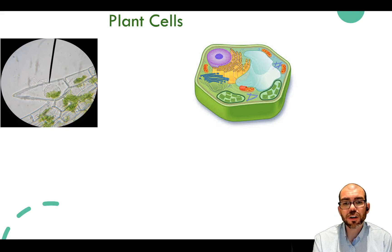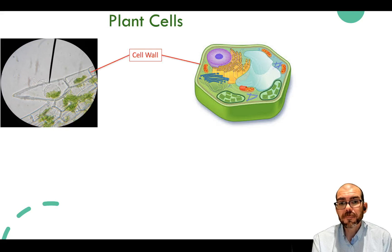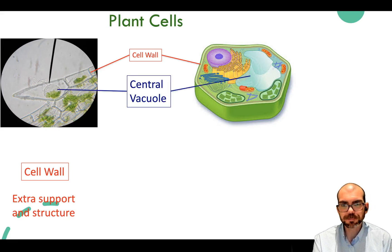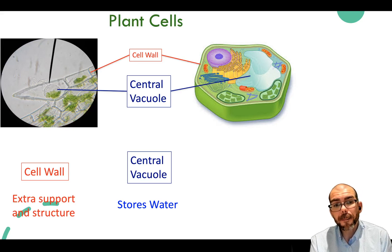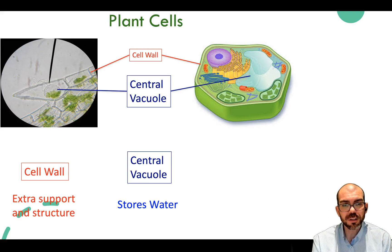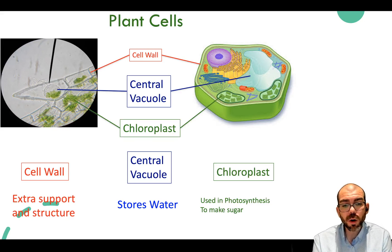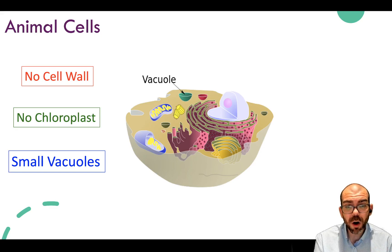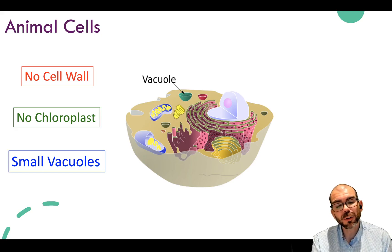Plant cells have three structures unique to them. First, they have a cell wall on the outside that provides extra support and structure—plants can be very tall and must support their own mass. They also have a large central vacuole whose primary function is to store water and whose secondary function is to apply pressure onto the cell wall, making it more robust. They also have chloroplasts, the organelle used in photosynthesis to make sugar. Animal cells have no cell wall, no chloroplast, and only very small vacuoles, since animals can move to find water.